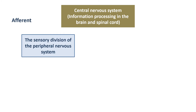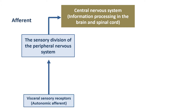Coming in via our afferent pathways - the overall umbrella term is the sensory division of the peripheral nervous system. Feeding into that we have our autonomic afferent neurons. These are the ones we're not really aware of, but what they're doing is constantly monitoring the situation in organs, tissues, and glands, and feeding that information via action potentials through the sensory division. This is the autonomic afferent branch, also called visceral sensory receptors.